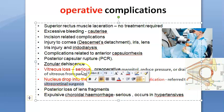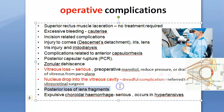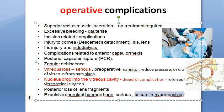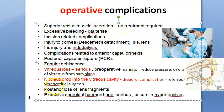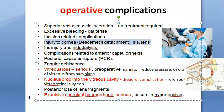Posterior loss of lens fragments can occur. Expulsive choroidal hemorrhage is also serious — this occurs in hypotension. Key operative complications to remember: vitreous loss is serious, nucleus drop into the vitreous cavity is dreadful, expulsive choroidal hemorrhage is serious, and injury to the cornea should also be remembered.